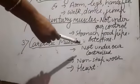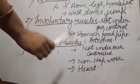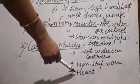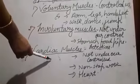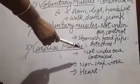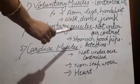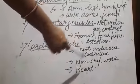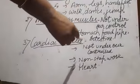The third type is cardiac muscles. We have no control over cardiac muscles. These muscles work non-stop, 24 hours. They are present in our heart and pump blood to all parts of the body. The heart keeps beating 24 hours so blood flows throughout our body.